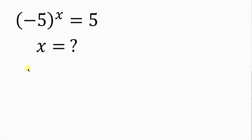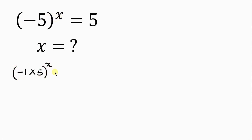Our first step towards solving this question is to simplify negative 5. Negative 5 can also be written as negative 1 times 5, and this is raised to the x, so we have negative 1 times 5, raised to the x, equal to 5.